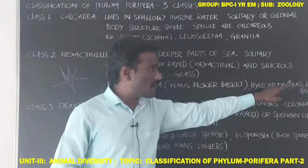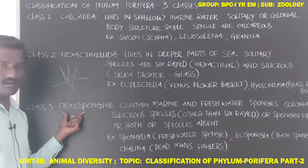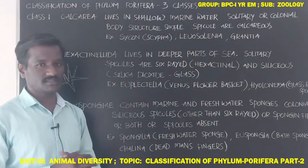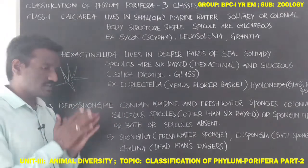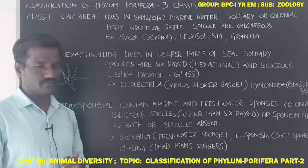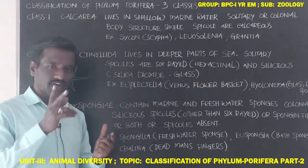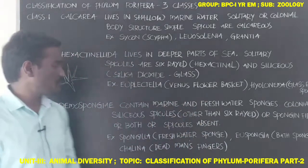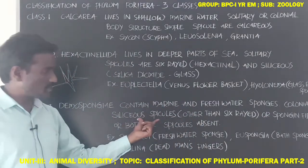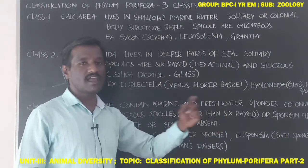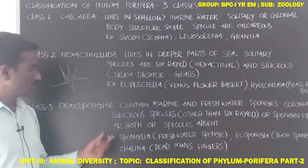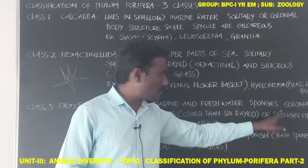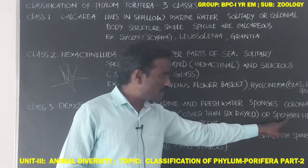The third class, Demospongiae, includes sponges that live in both fresh water and marine water. This class contains both freshwater and marine sponges. They are colonial, forming a colony. Siliceous spicules are present, but six ray-like structures are absent — the spicules are made up of silica dioxide.